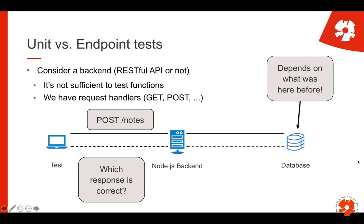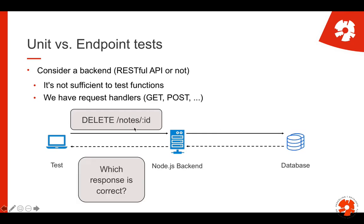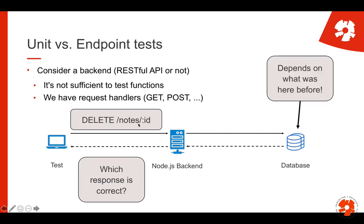We might also want to test what's going on in the database, because whether the response is correct depends on what was in the database before. Similarly, a DELETE request's correct response depends on the database state — making these larger integration tests that cover the entire backend system including the database. For example, a DELETE request should return 200 if the node with the provided ID existed, 404 if it doesn't, and 403 if authentication is required.